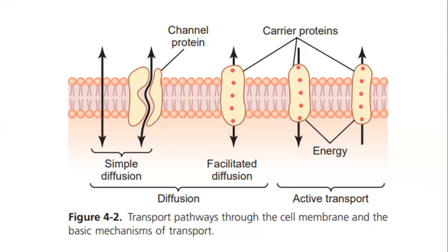There are pathways for the cell membrane and basic mechanisms of transport. In passive transport, diffusion and osmosis occur with no use of energy. Diffusion is of two types: simple diffusion and facilitated diffusion. Simple diffusion occurs just through the lipid bilayer — lipid-soluble contents move easily. For example, oxygen and carbon dioxide are rapidly diffused through the concentration gradient.